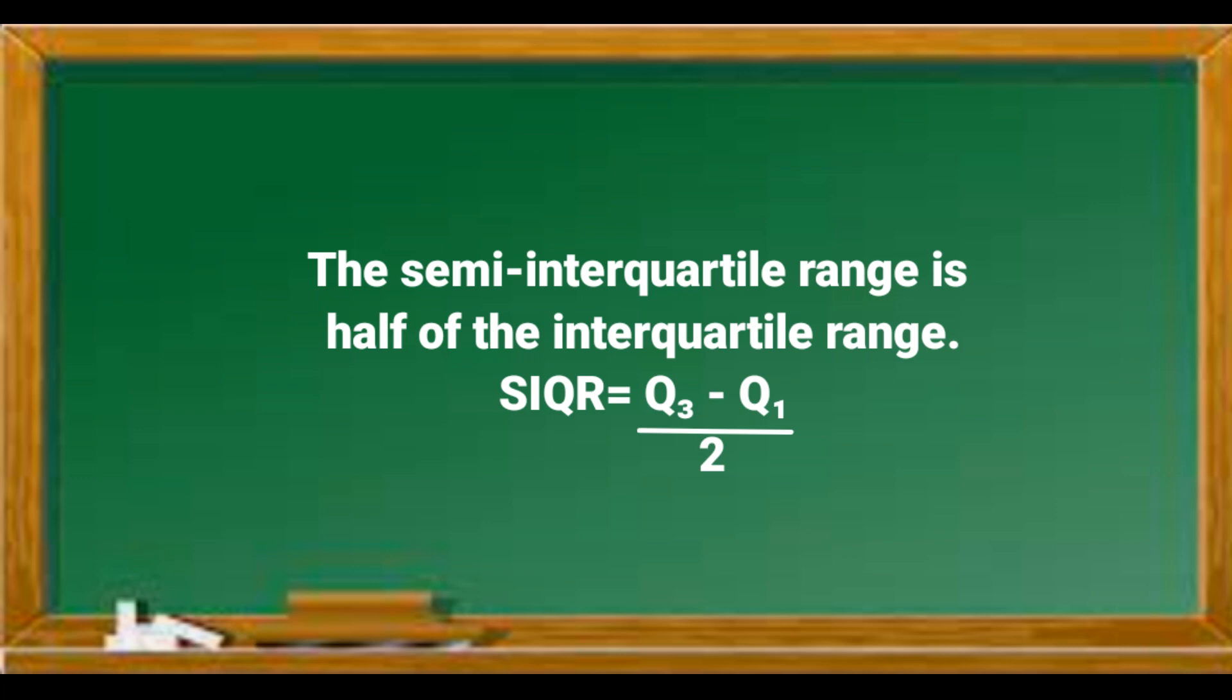The semi-interquartile range is half of the interquartile range. SIQR is equal to Q3 minus Q1 all divided by 2.